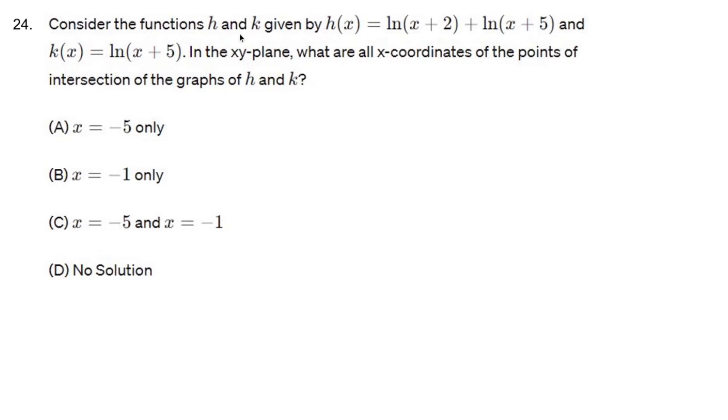Consider the functions h and k given by h of x equals ln of x plus 2 plus ln of x plus 5 and k of x equals ln of x plus 5. In the xy plane, what are all the x coordinates of the points of intersection of the graphs of h and k?